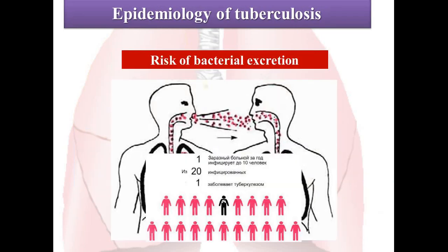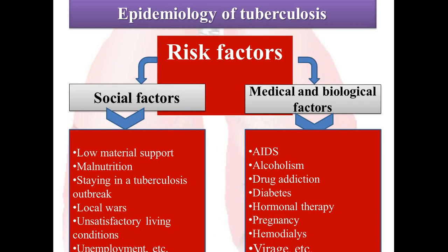One patient with chronic tuberculosis expels 7 billion Mycobacterium tuberculosis per year, and from this one patient, 150 to sometimes 200 persons may be infected, of whom 10 to 15 persons will actually catch the disease.